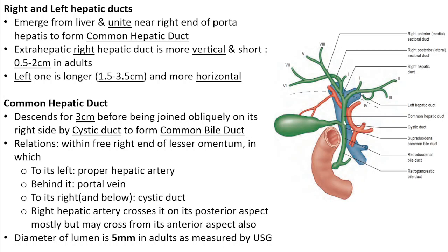Within the right free margin of the lesser omentum, the common hepatic duct has the proper hepatic artery to its left and the portal vein behind it. To its right and slightly below lies the cystic duct. The right hepatic artery, arising from the proper hepatic artery on the left, must cross the common hepatic duct — most commonly on its posterior aspect, though occasionally on its anterior aspect. The luminal diameter is about 5 millimeters.